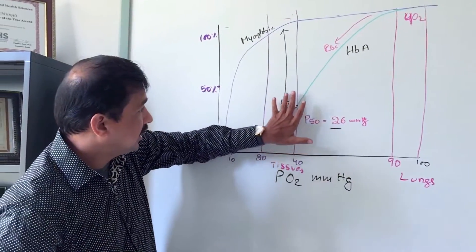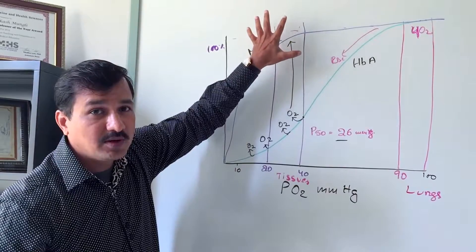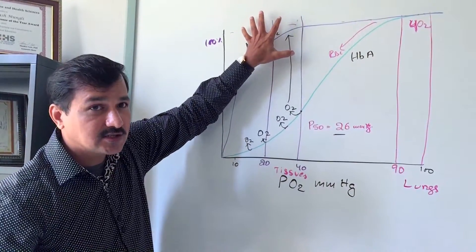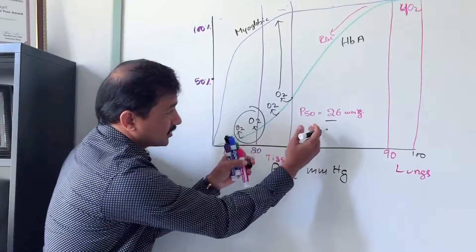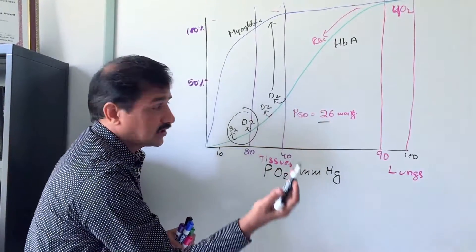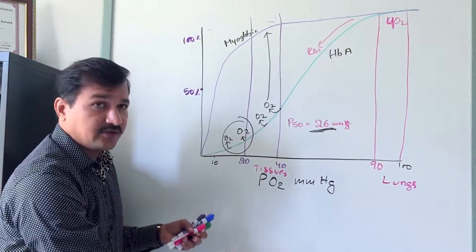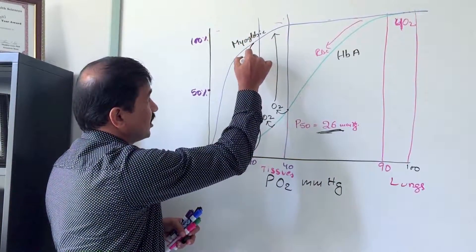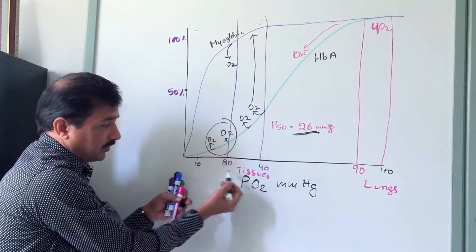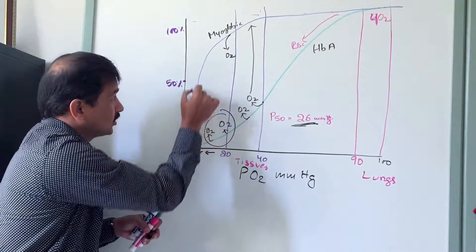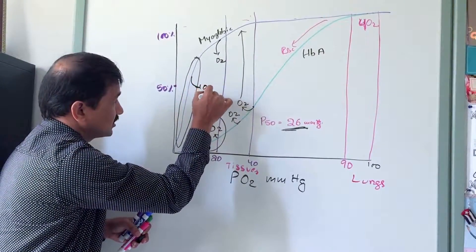At tissue partial pressures of 20 to 40 mmHg, the myoglobin curve shows nearly 100% saturation, confirming myoglobin stores the released oxygen. Myoglobin releases this stored oxygen when partial pressure of the peripheral tissue falls below 26 mmHg — that is, during exercise when oxygen demand increases.